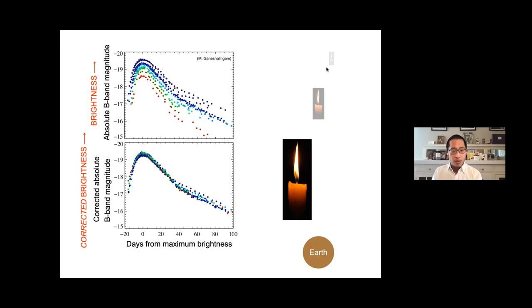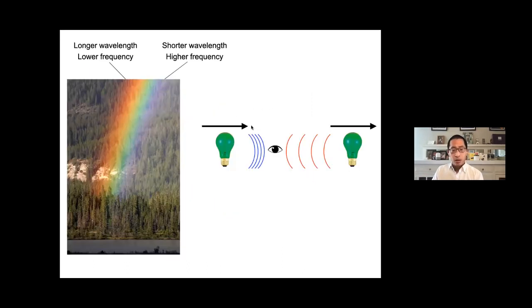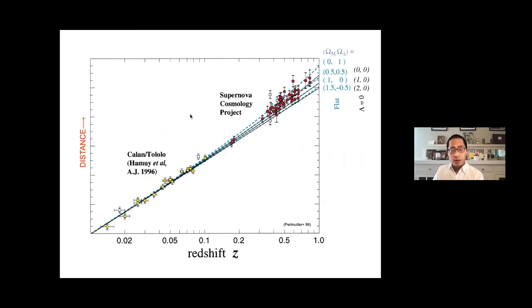Supernovae are great — not only are they standardizable, they also happen to be extremely bright, so we can see them something like halfway across the universe. Type 1A supernovae give us a cosmological distance indicator. Things that come toward us are blueshifted and things moving away from us are redshifted. We've known since the 1920s that galaxies far away from us are also receding from us. So we can correlate the distance to a galaxy based on its type 1A supernovae with the redshift of that galaxy. This plot shows distance versus redshift — the redshift you can get by looking at the spectrum of the host galaxy, but distance requires something like a type 1A supernova.